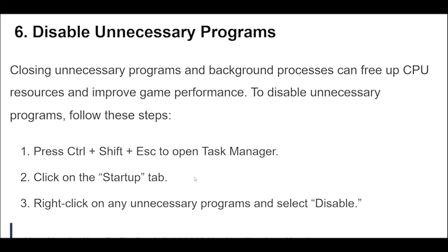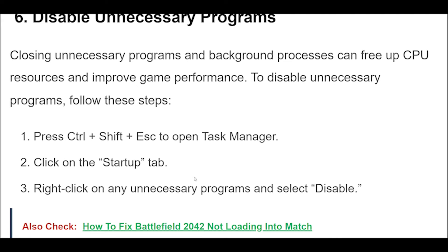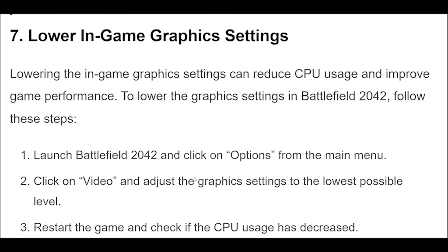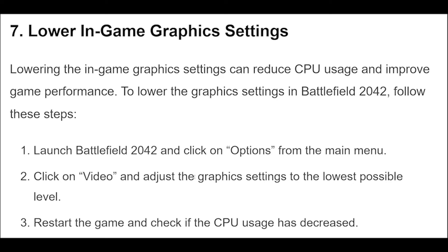Lowering the in-game graphics settings can reduce CPU usage and improve game performance. To lower the graphics settings in Battlefield 2042, launch the game and click on Options from the main menu, click on Video and adjust the graphics settings to the lowest possible level. Restart the game and check if the CPU usage has decreased.